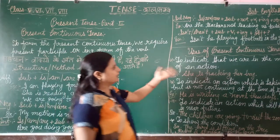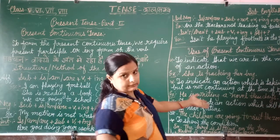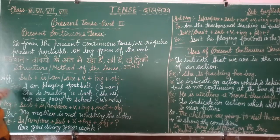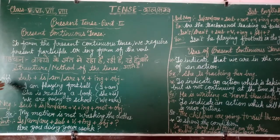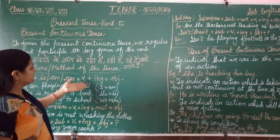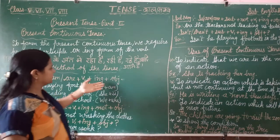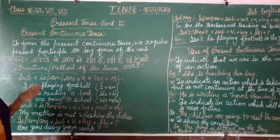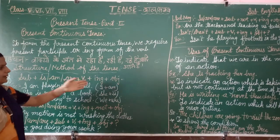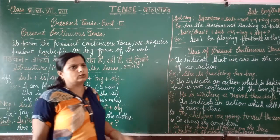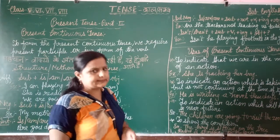The structure is: subject plus is, am, or are, plus V1 plus ING plus object. Students, here we always use V1 plus ING in affirmative, negative, and interrogative sentences.